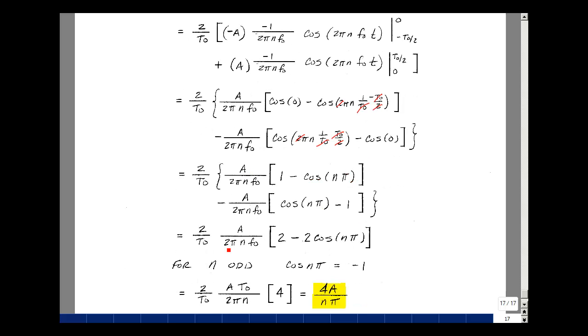I'm going to show the algebra. I've got a common A over 2πnf0. I'll pull that out, and I've got a 2 over T0, and I'm left with 1, and then a minus, a minus 1, so I get 2. And then I have minus the cosine of nπ, and then I have another minus the same quantity, so I've got minus 2 cosine of nπ.